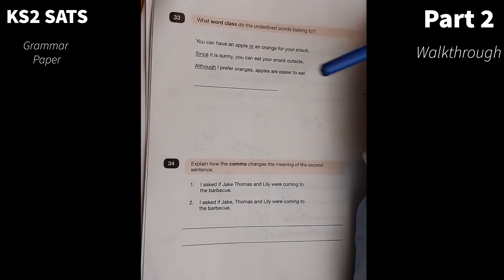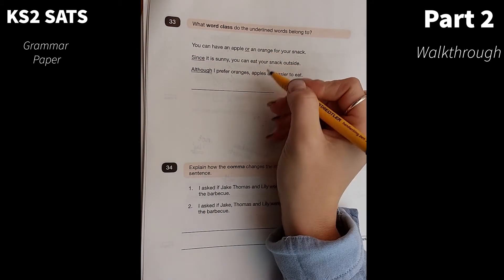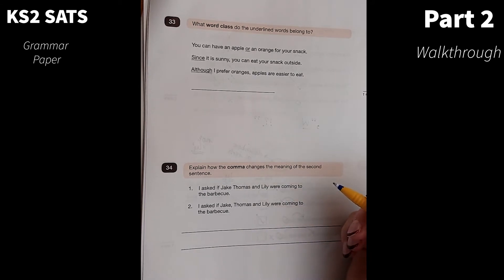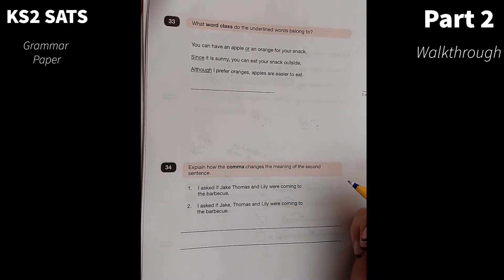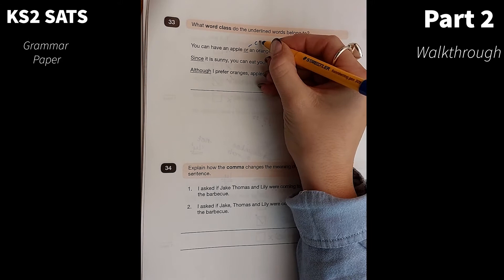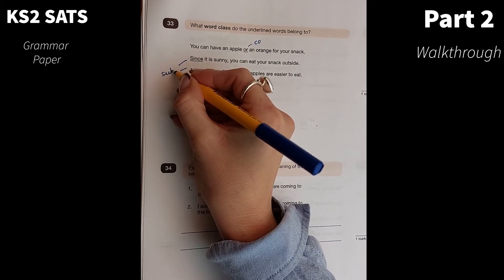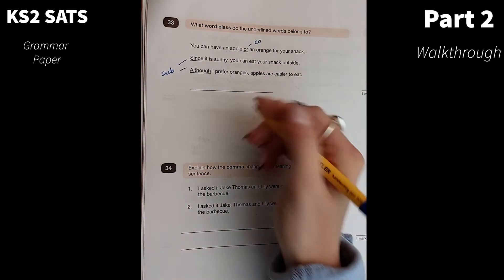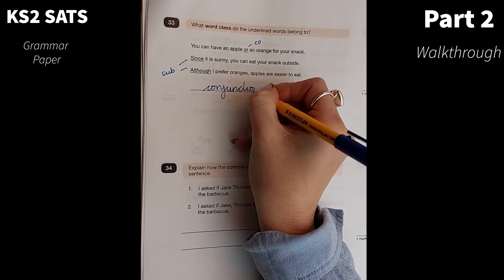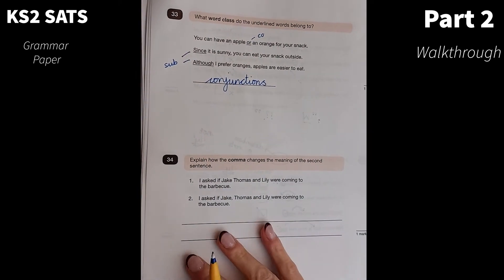Number 33. What word class do the underlined words belong to? You can have an apple or an orange for your snack. Since it is sunny, you can eat your snack outside. Although I prefer oranges, apples are easier to eat. You should recognise here that these are all conjunctions. We have or, which is a coordinating conjunction. And we have since and although, which are subordinating conjunctions. The answer you would simply need to put here is conjunctions. You wouldn't put subordinating. You wouldn't put coordinating. You would literally just put your answer there as conjunctions.